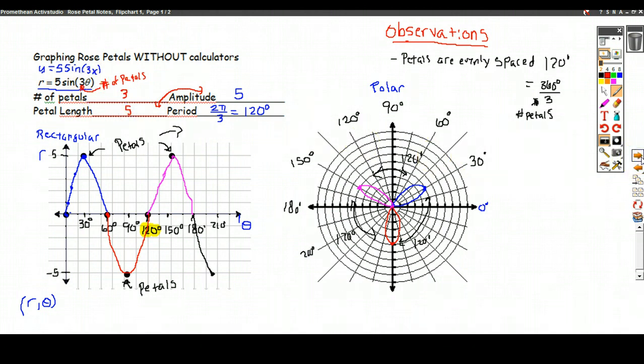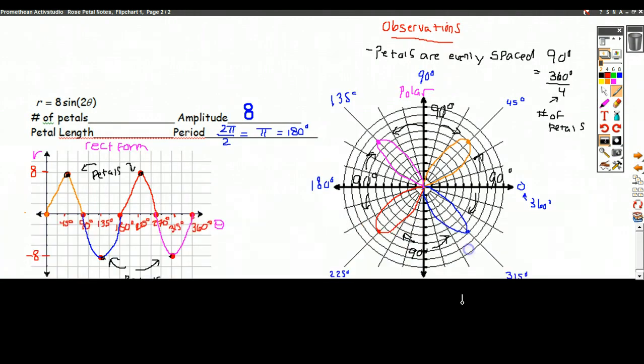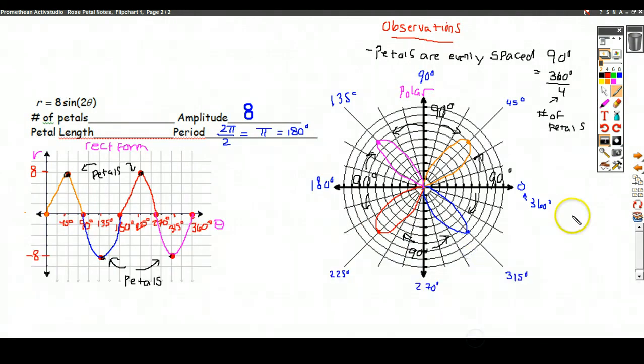And the 3 showed up right in the equation. Here, the number of petals is not 2, it's 4. So even though this tells you how to get the number of petals, it's not always the case that this is the number of petals. The number of petals in this case was double that.